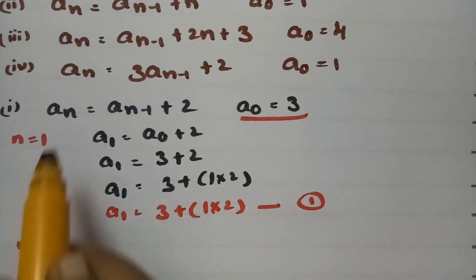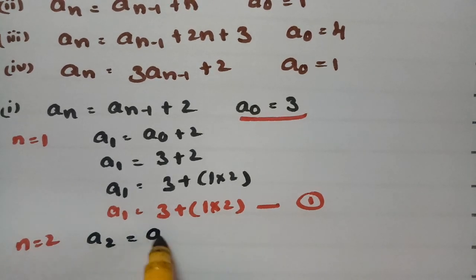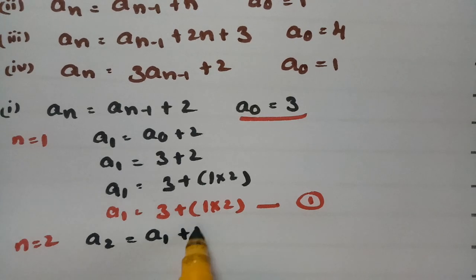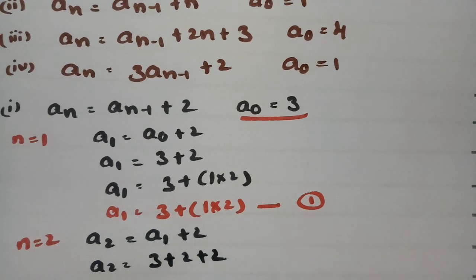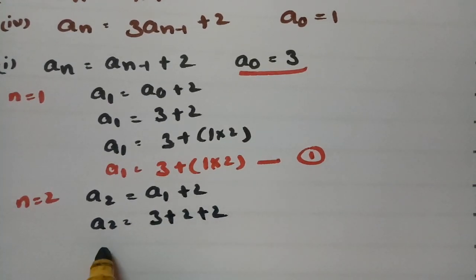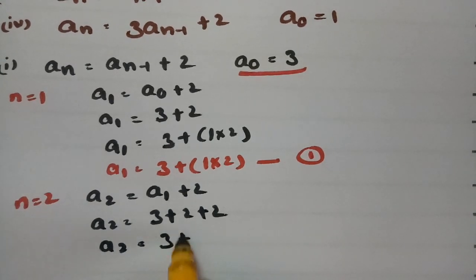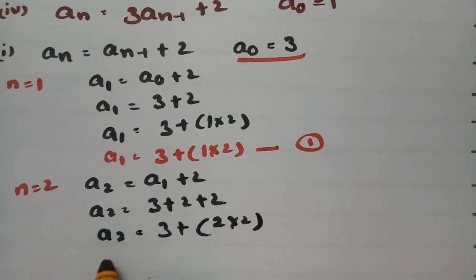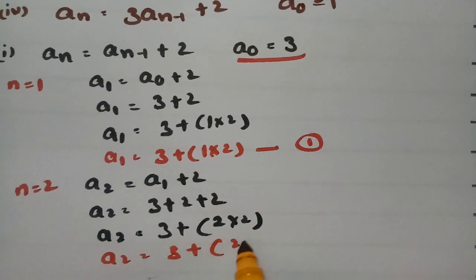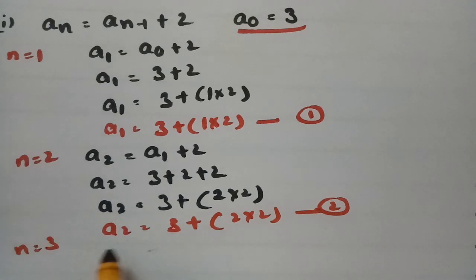If I keep n = 2, a₂ = a₁ + 2. Since a₁ = 3 + 2, we get a₂ = 3 + 2 + 2 = 3 + 4, which can be written as a₂ = 3 + 2×2. This is equation 2.